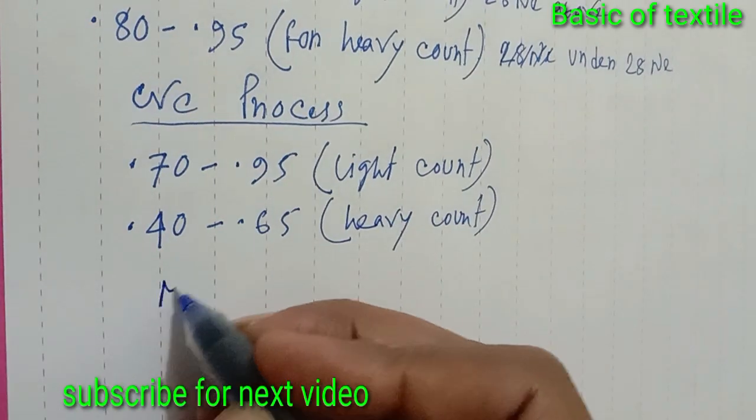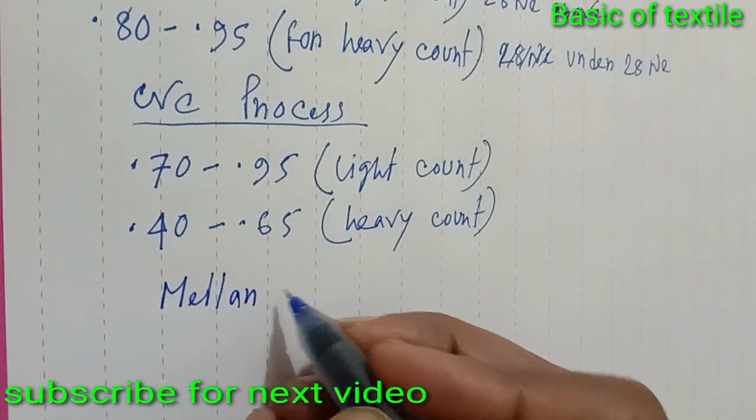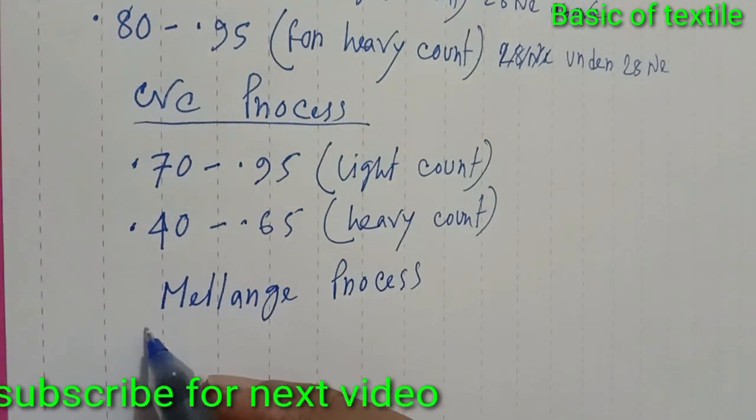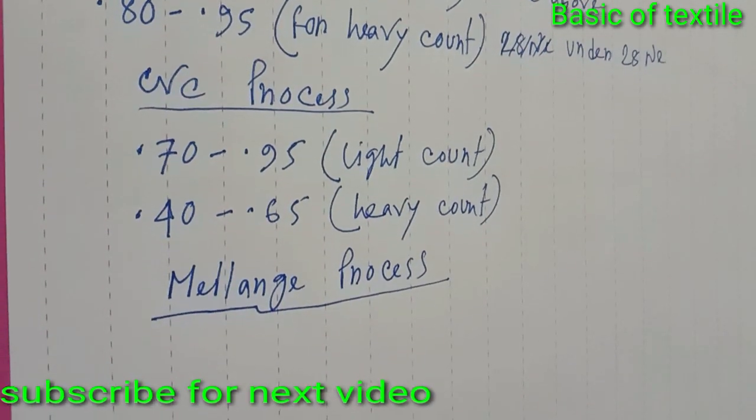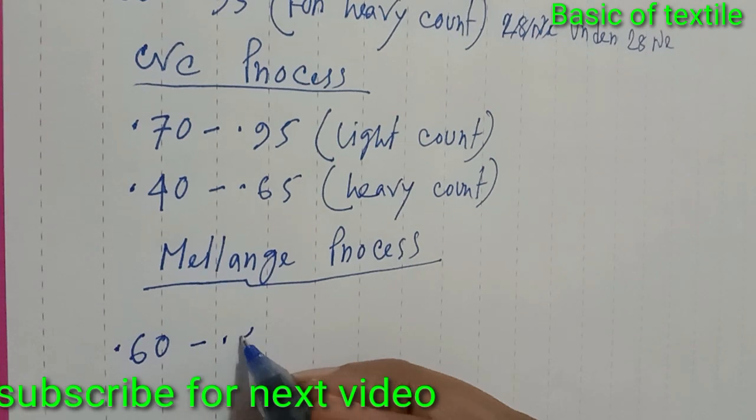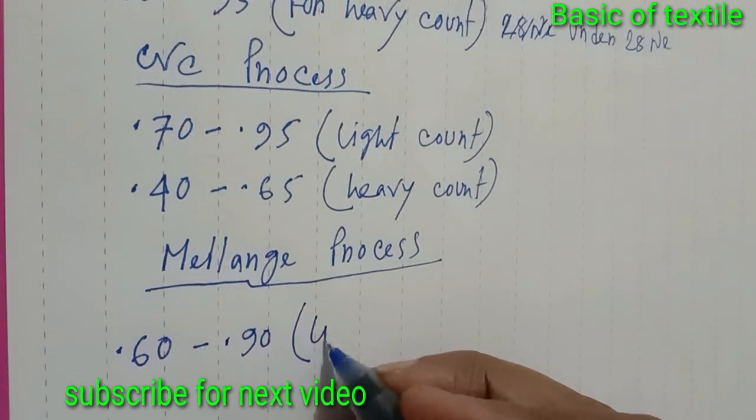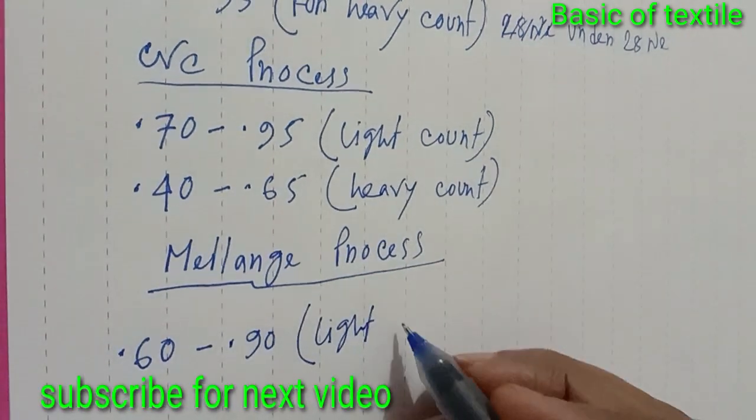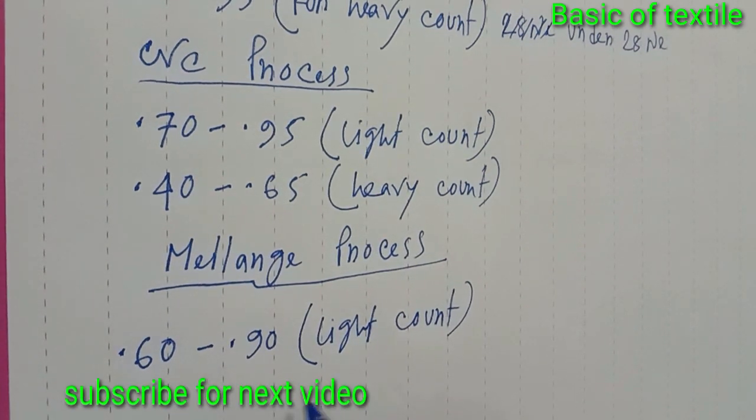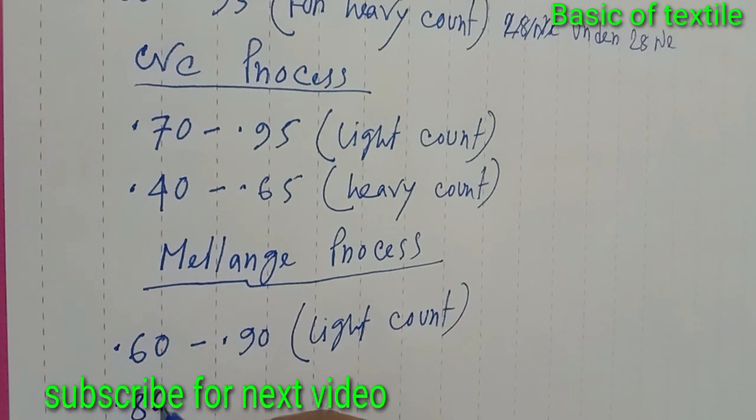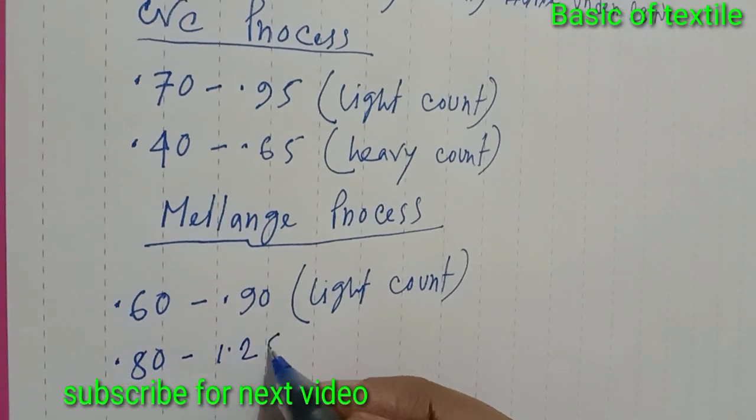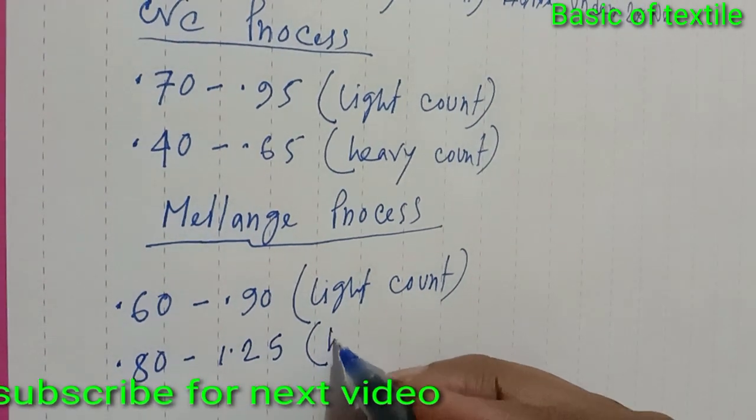Next, roving process: 1.60 to 1.90 for light count, 0.80 to 1.25 for heavy count.